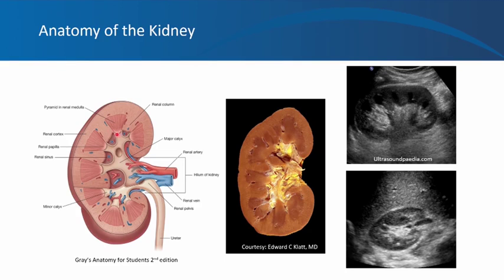The pyramids open into minor calices, which is the first part of the renal collecting system. These open into major calices, which fuse to form the funnel-shaped renal pelvis, which ultimately continues as the ureter. The gaps in between the renal collecting system and the parenchyma, seen in a normal kidney, are filled with fat called the renal sinus fat. This kidney specimen shows the cortex, pyramids, renal sinus fat, and collecting system.